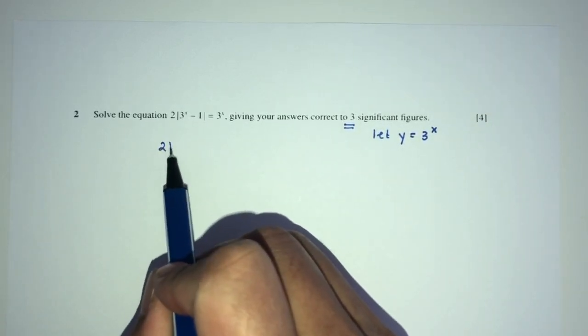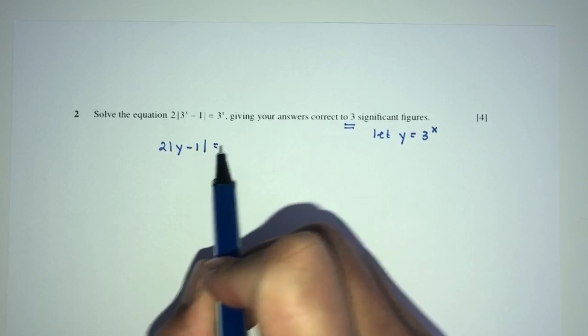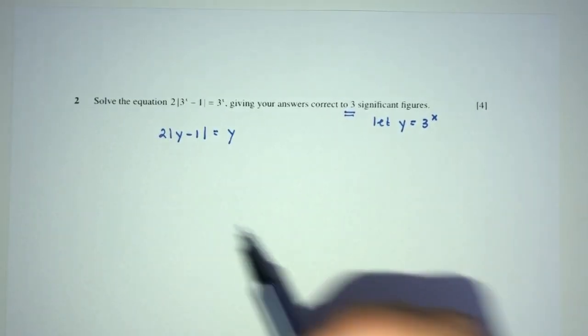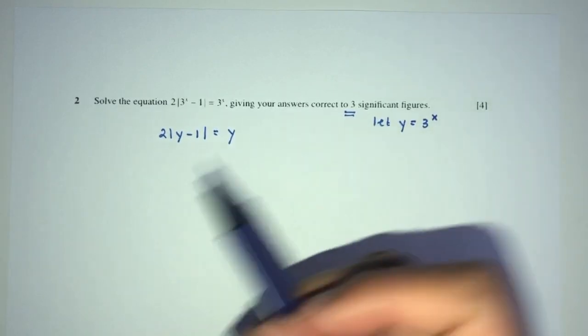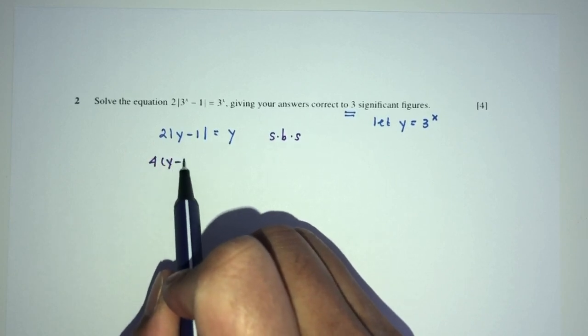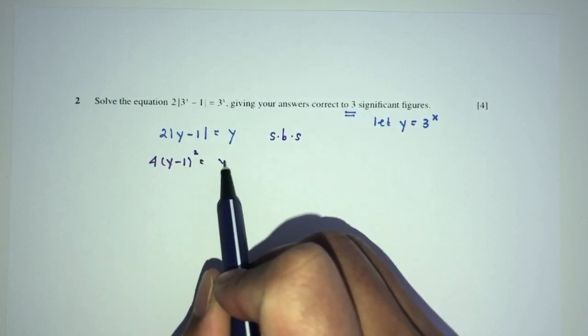You will have 2 times the square root of y minus 1 equal to y. Now, obviously, we can simplify or solve, square both sides if you want to. You will have 4 times y minus 1 squared, that should be y squared.